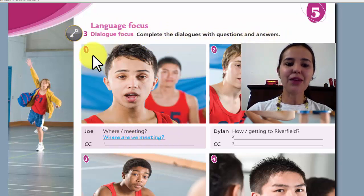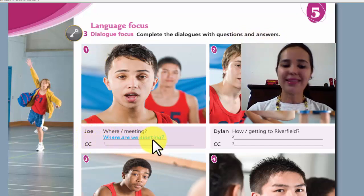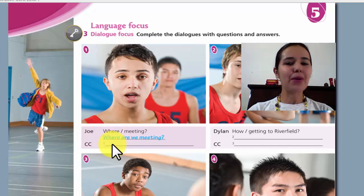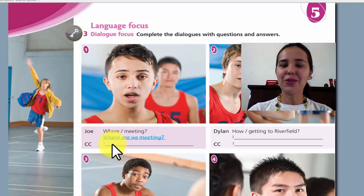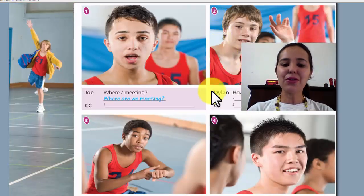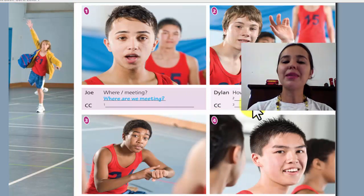For example, dialogue number 1. Joey and coach Carson are talking. Where are we meeting? Do you remember the answer? If you don't remember, go back to page 52. Read the text and answer the question. Here you have dialogues number 2, 3 and 4. Please complete the questions and the answers according to the text.